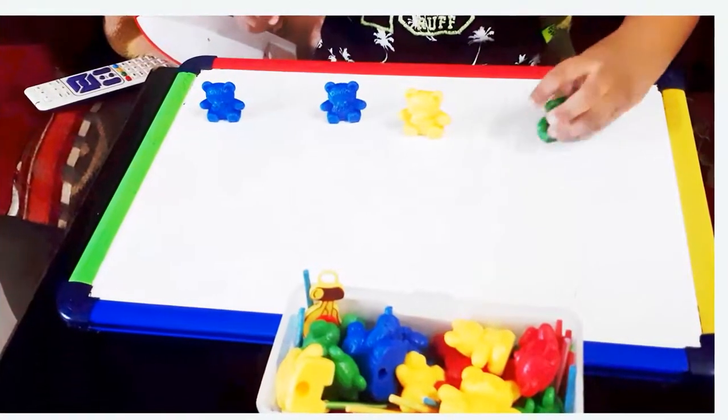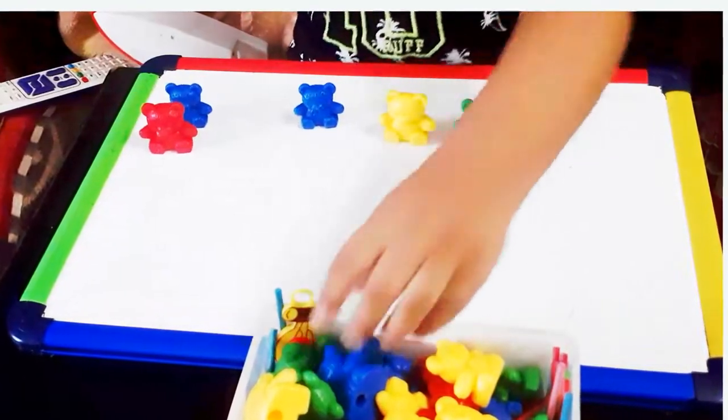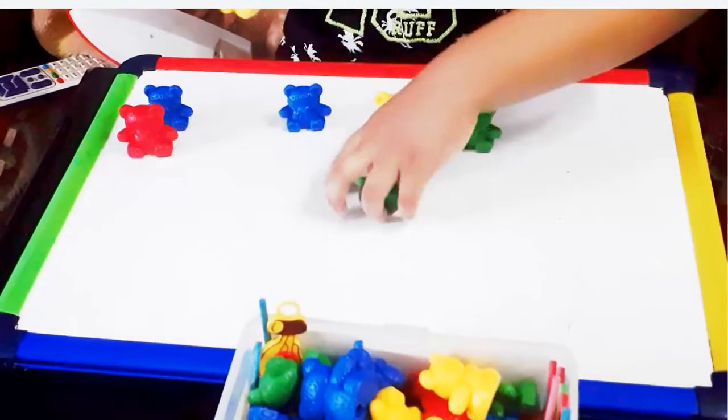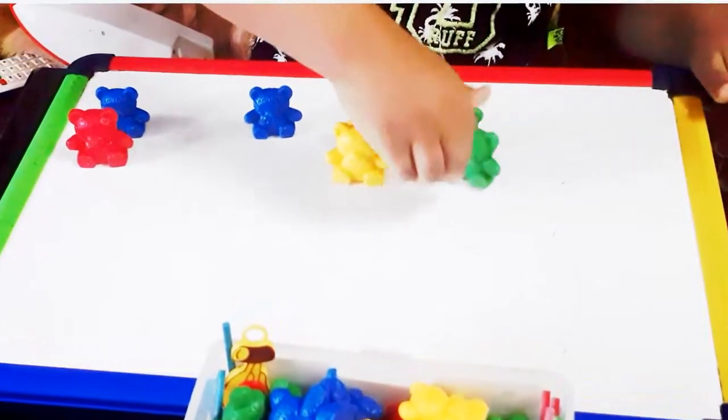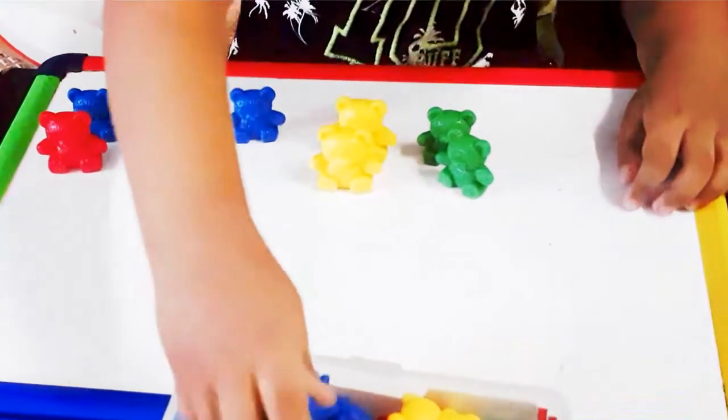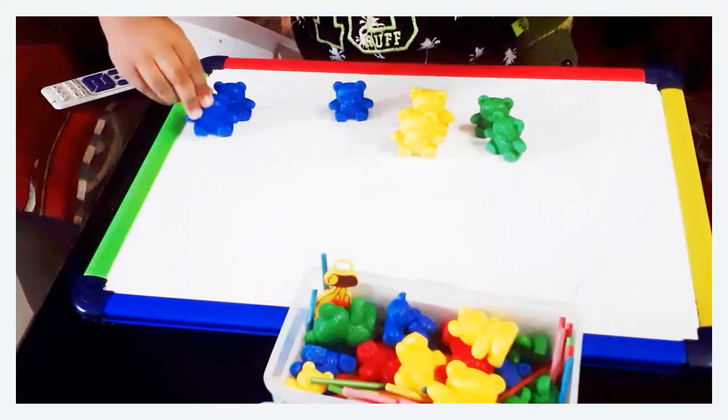You can buy this online or even use things at home. You can use macaroni, pasta, or different color cubes, anything you find in the market. Please make sure that it's not chewable and not swallowable, because I'm going to place it on a whiteboard.